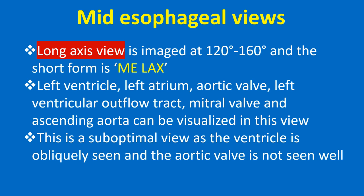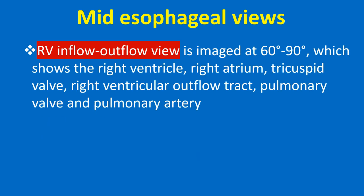In the ME LAX view, the left ventricle, left atrium, aortic valve, left ventricular outflow tract, mitral valve, and ascending aorta can be visualized. This is a suboptimal view as the ventricle is obliquely seen and the aortic valve is not seen well.